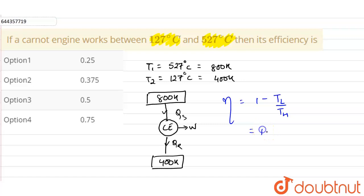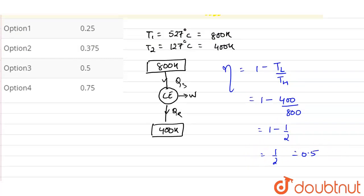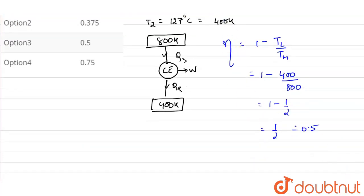So this will be equals to 1 minus T_lower is 400 divided by T_higher is 800, so it will be equals to 1 minus 1 upon 2, that will be equals to 1 upon 2, or 0.5. So the efficiency of the Carnot engine comes out as 0.5.